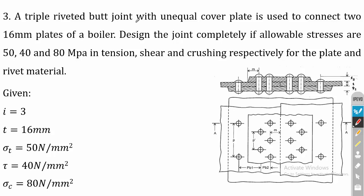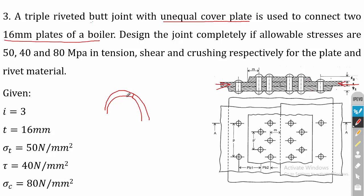The butt joint connects two 16 mm plates of a boiler and the cover plate thickness is unequal. As you can see in the image, this is the boiler plate with two cover plates. The thickness of the inside cover plate is different from the thickness of the outside cover plate. There is an inside cover plate and an outside cover plate, and the riveting is carried out accordingly.